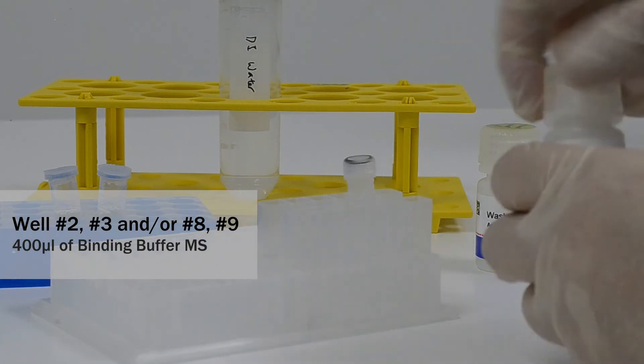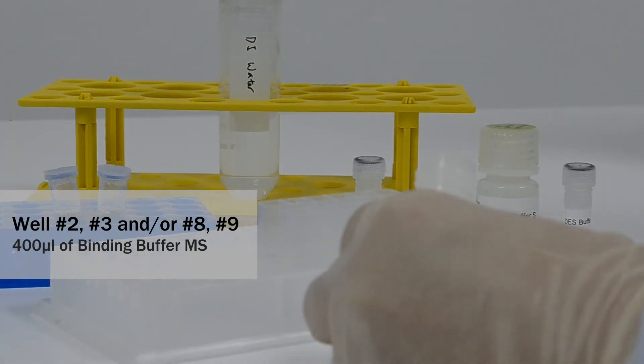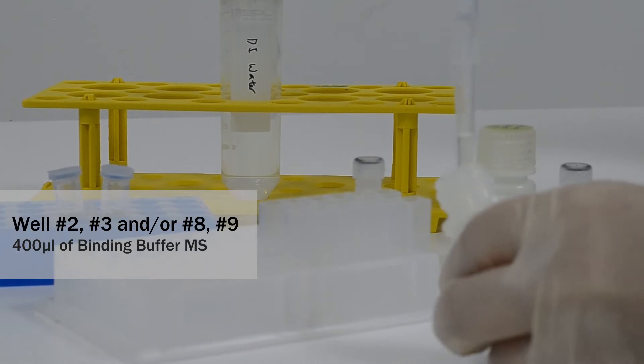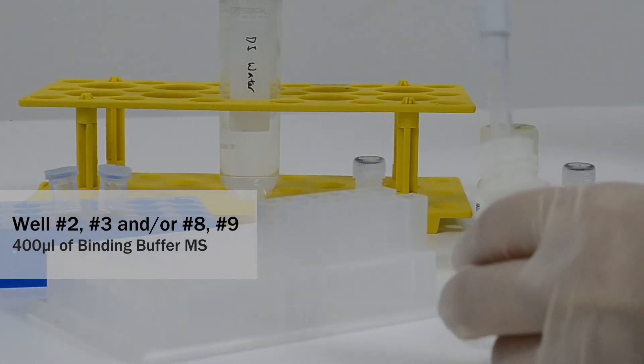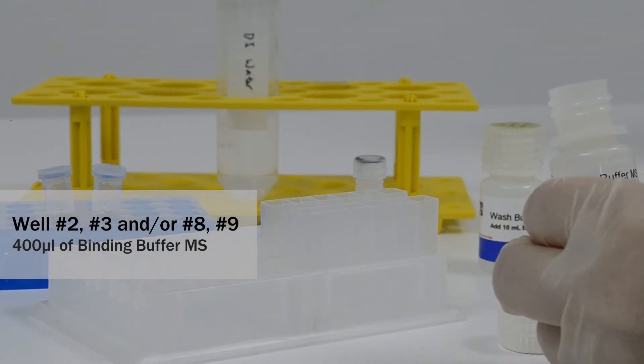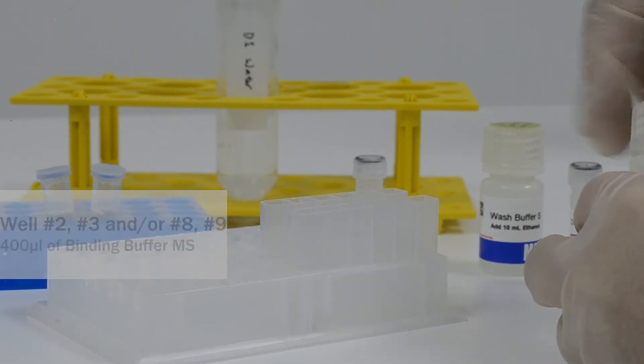Next, add 400 microliters of binding buffer into the second and third wells. If you are using 96 deep well plates, you can allocate it into the second, third, eighth and ninth well or column.